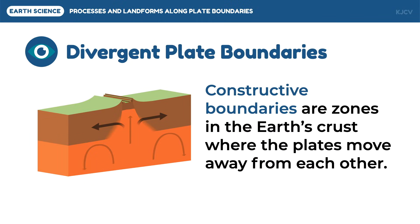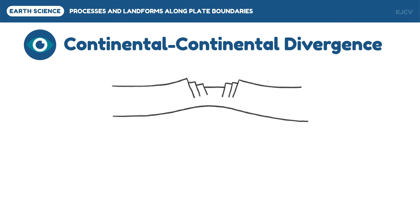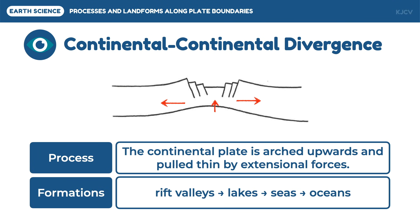Now let's discuss divergent plate boundaries. Divergent plate boundaries are zones in the Earth's crust where plates move away from each other. These are also called constructive boundaries since new crust is formed. There are two types of divergent boundary, and they only occur on similar crusts. The first one is the divergence between two continental crusts, where mantle activity makes the continental plate bulge upwards forming a rift valley. It continues to receive extensional forces until it breaks apart into two continental crusts forming a lake, growing bigger through time until it becomes a sea and an ocean.